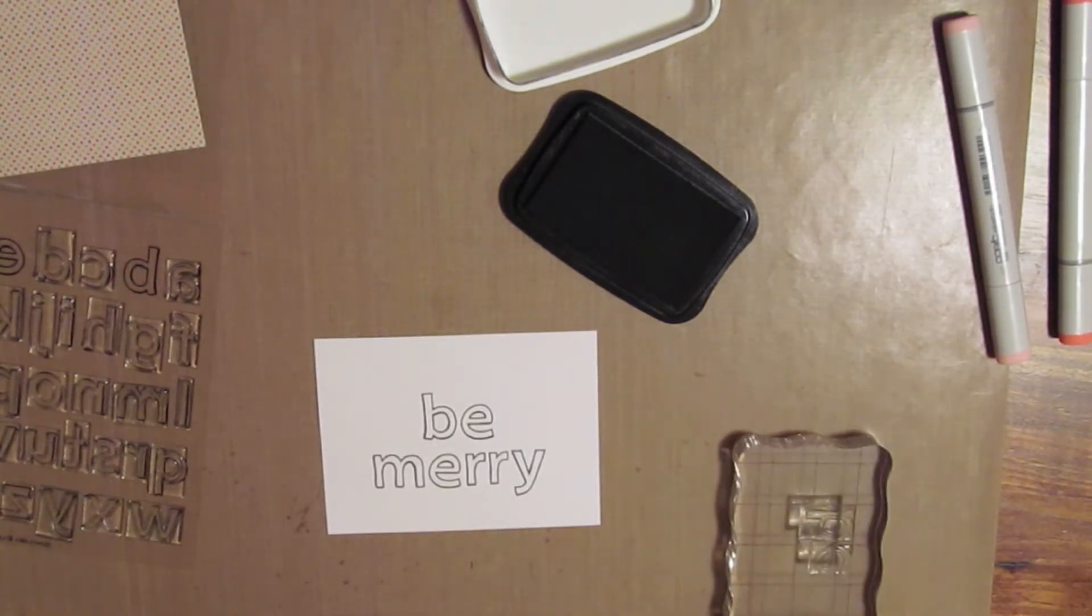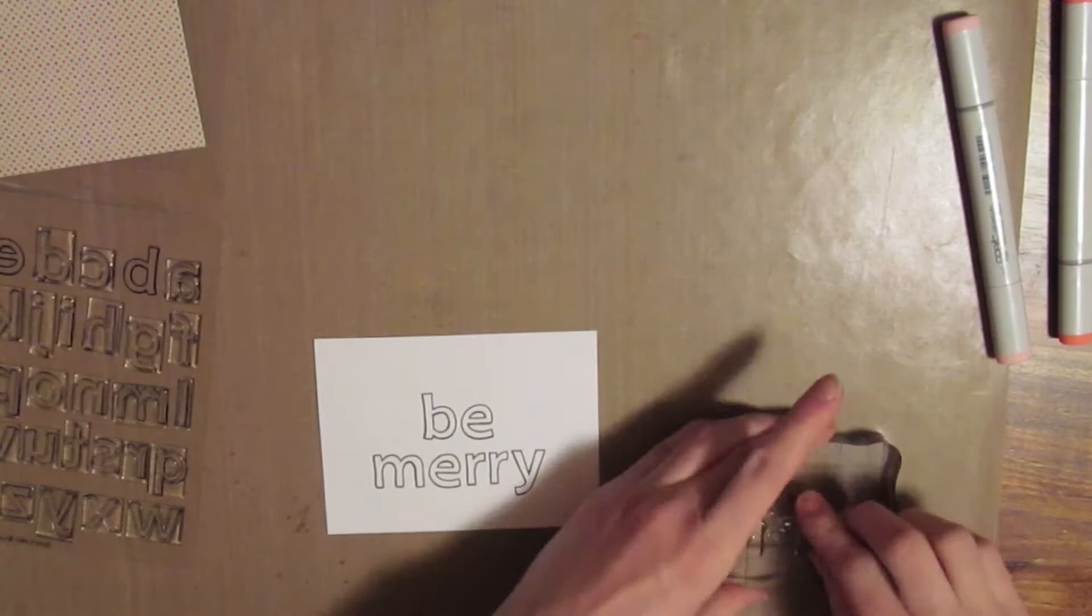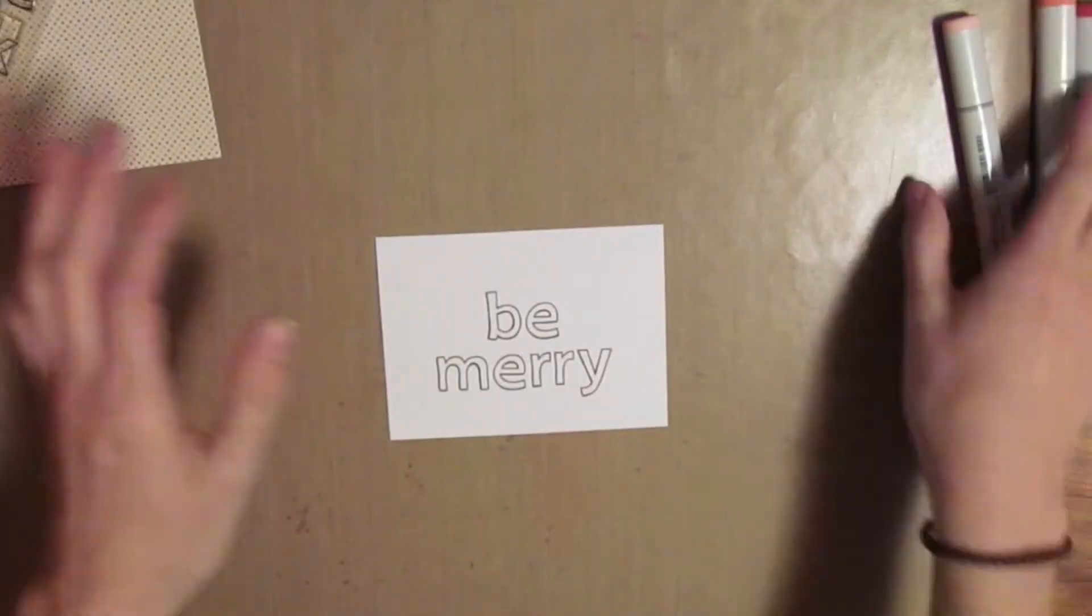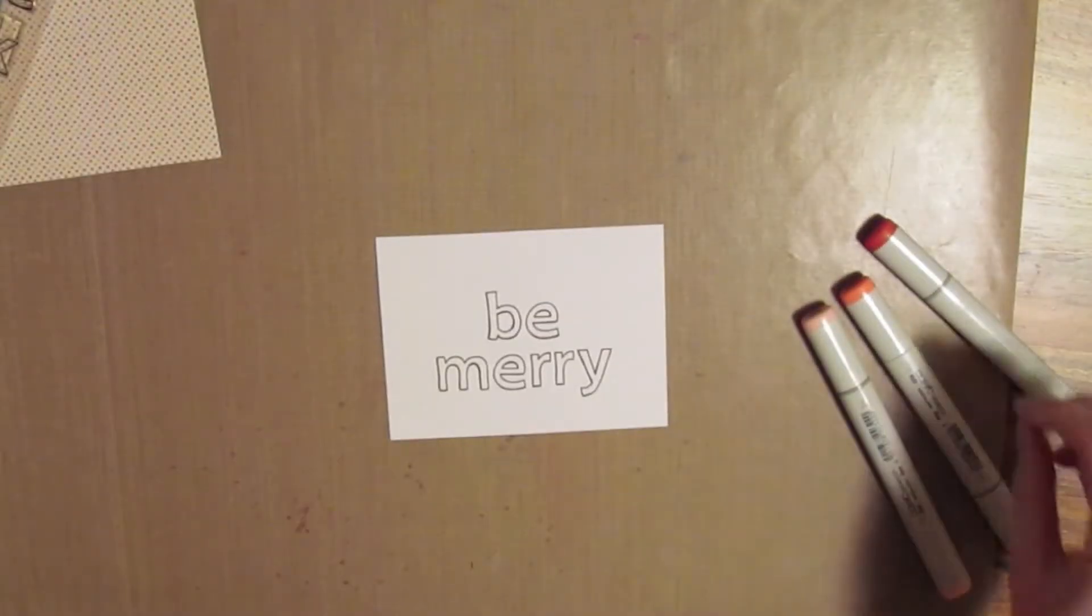Alright, so I got that stamped out. And then I have my three Copic Markers: the R24, R22, and R20 is the lightest.